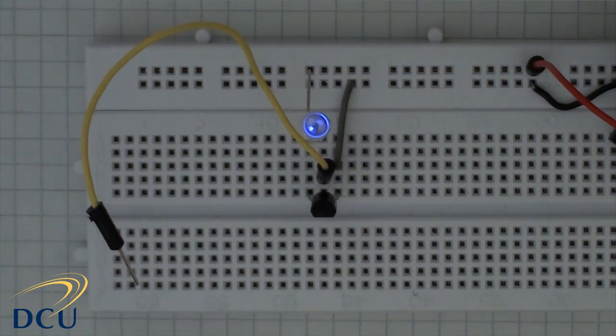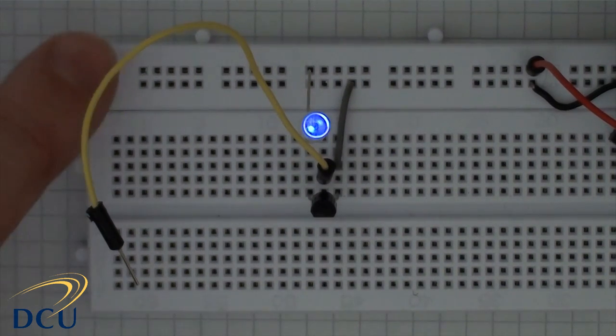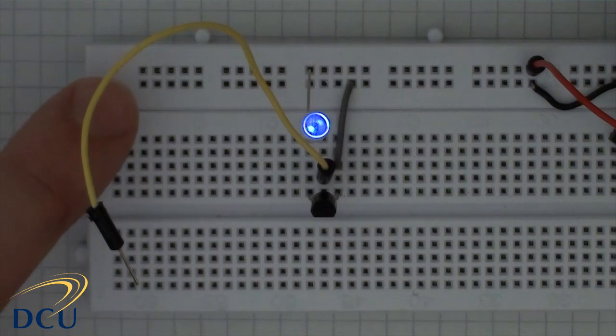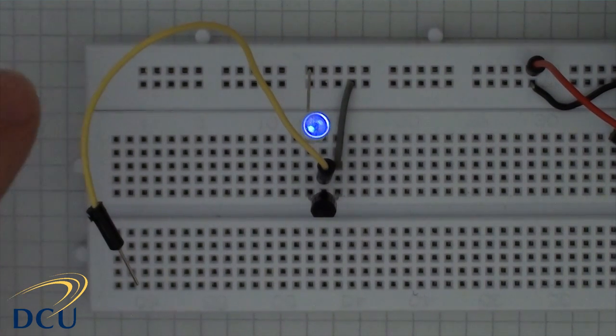In this circuit I've got a 9V battery connected to the high rail, so the top rail is connected to 9V. The lower rail is connected to the negative of the battery, so we can take that as a difference of 9V between the red and the black rail.